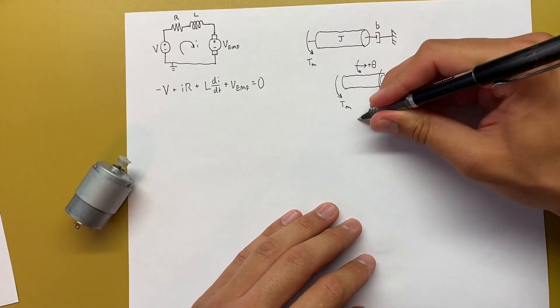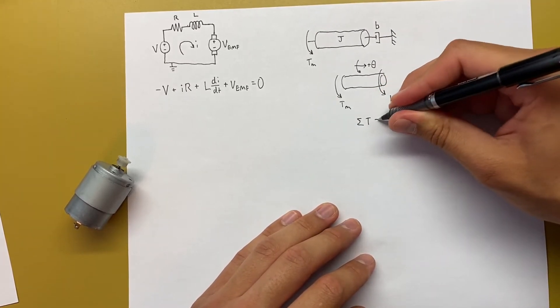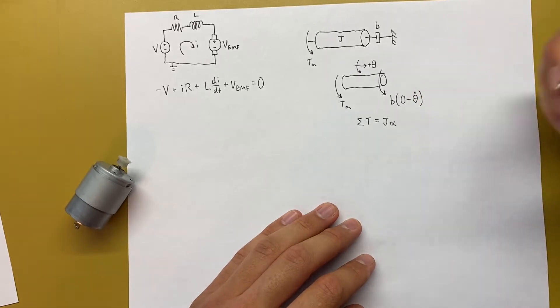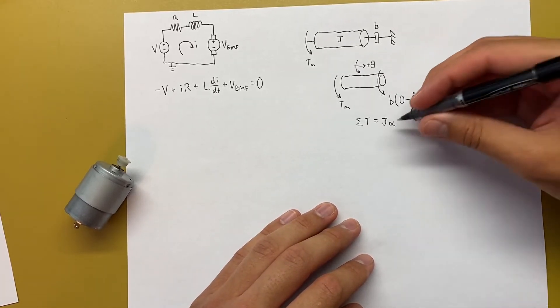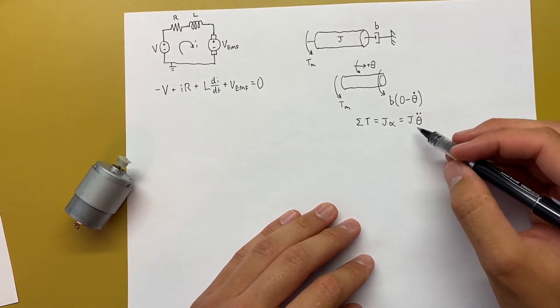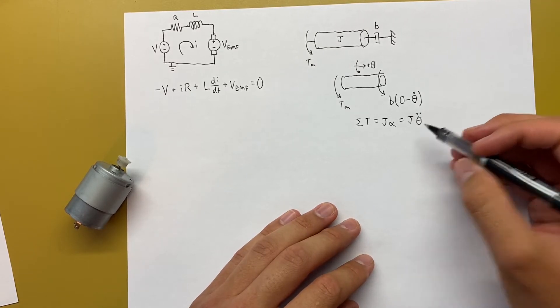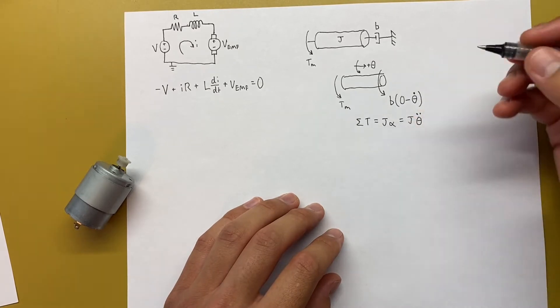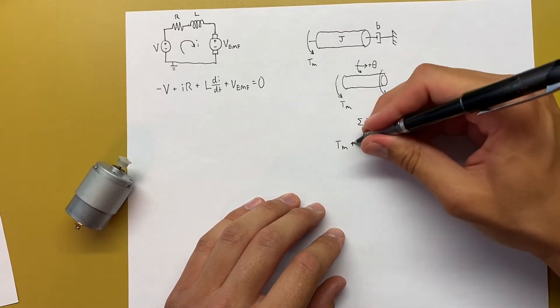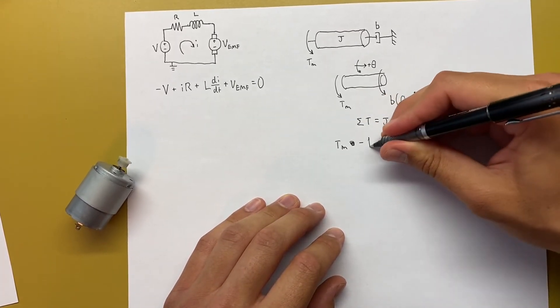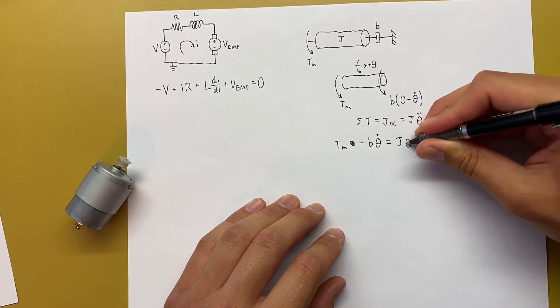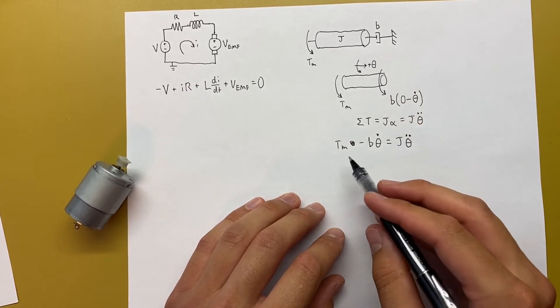And we know that the sum of all the torques on a body is equal to the moment of inertia of the body, J, times the angular acceleration, alpha. But for our case, since we're using theta and theta dot, we'll just write it as J theta double dot, since acceleration is a second derivative of the position, angular acceleration is a second derivative of the angle. From here, we can write out the sum of the torques now. So we know that there's TM, the torque from the motor, plus, actually this is going to be a negative, B times theta dot equals to J times theta double dot. And that's our mechanical equation.